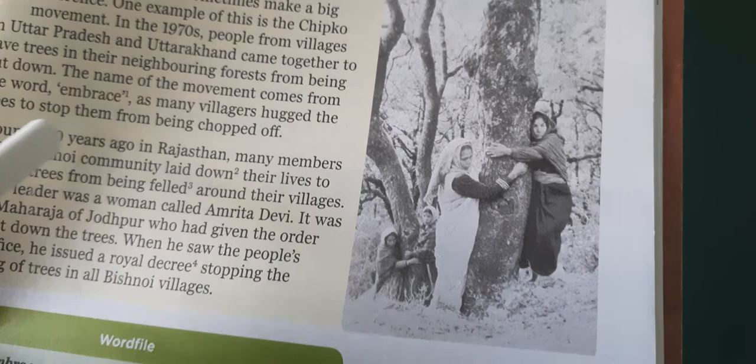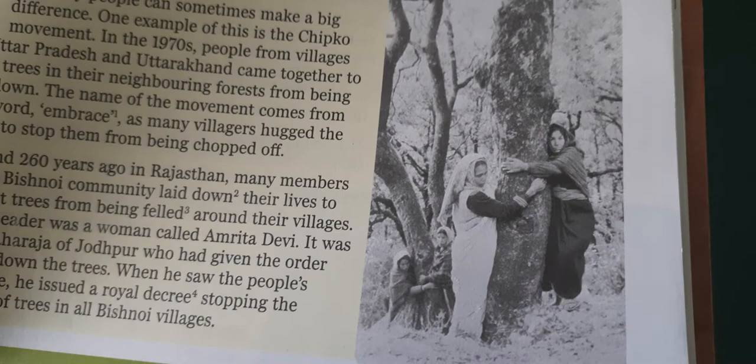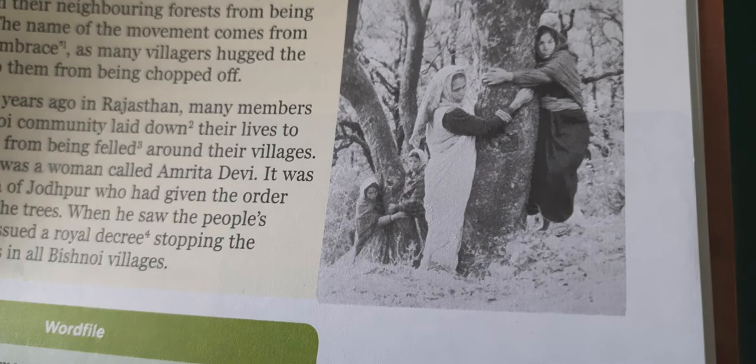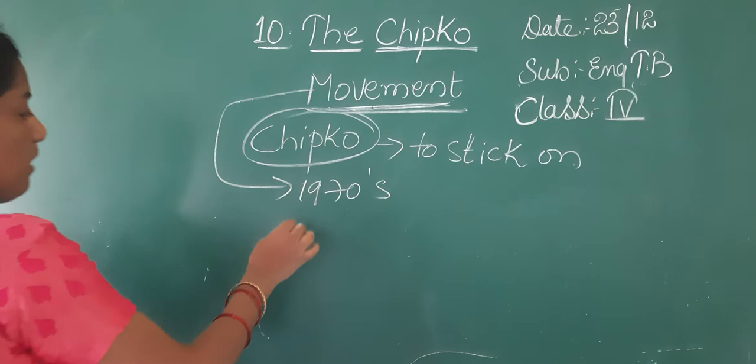Around 260 years ago in Rajasthan, many members of the Vishnoi community laid down their lives to protect trees from being felled around their villages. Their leader was a woman called Amrita Devi. The Vishnoi community leader was Amrita Devi.